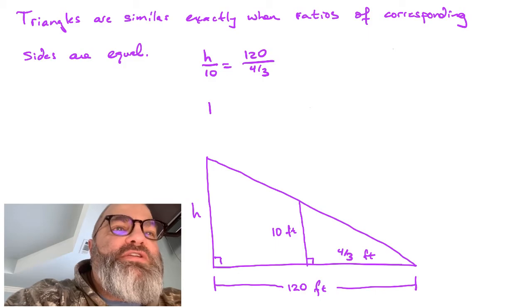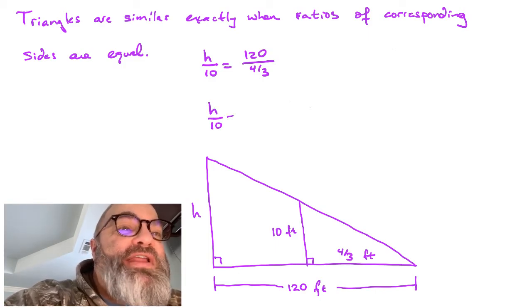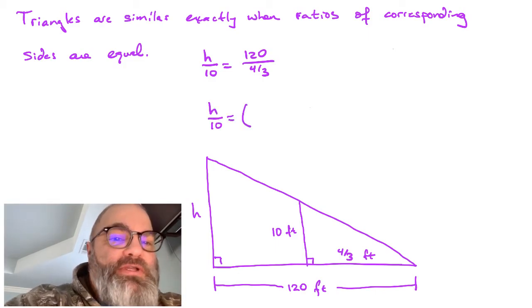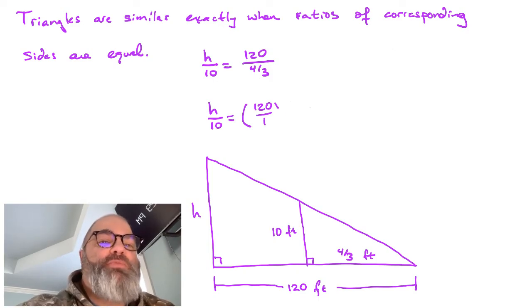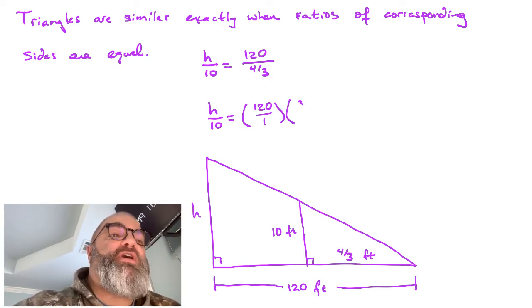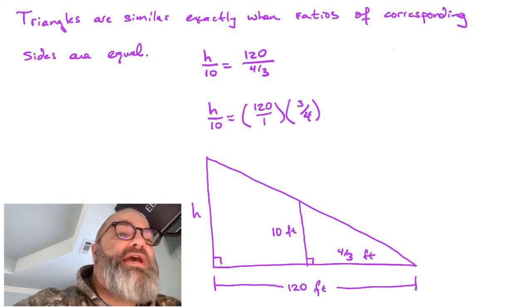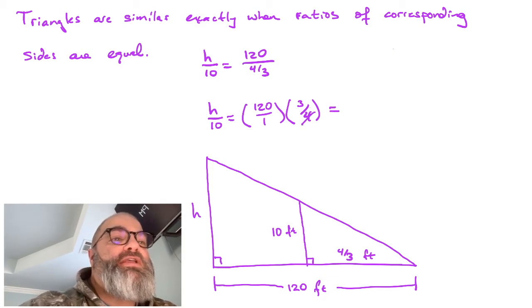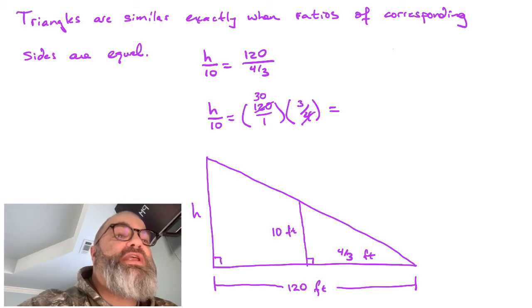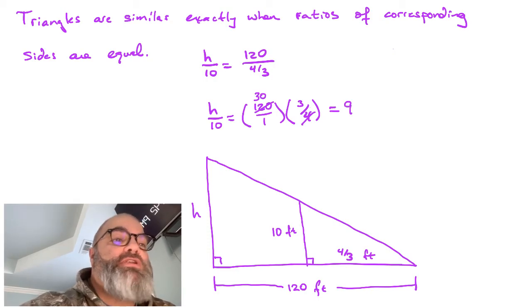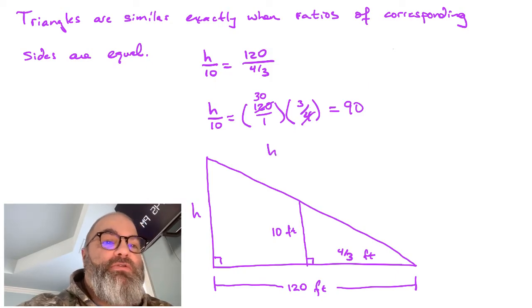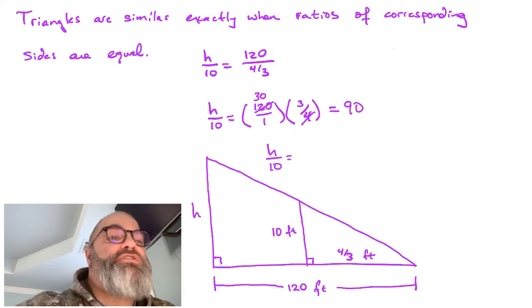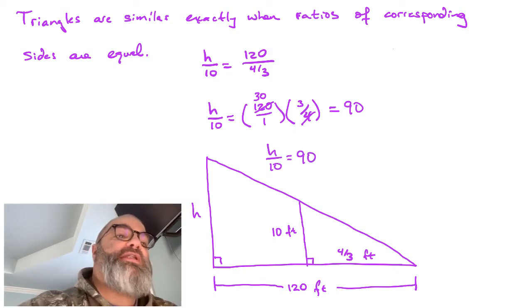In solving our equation, we remember that when we're dividing by a fraction, that's going to be the same thing as multiplying by the reciprocal of the divisor. So we've really got 120 times our 3 fourths. Now, the 4 is going to cancel with the 4 and 120 giving us a value of 30. 3 times 30 then gives us 90. And so the equation that we need to solve is H over 10 is equal to 90.